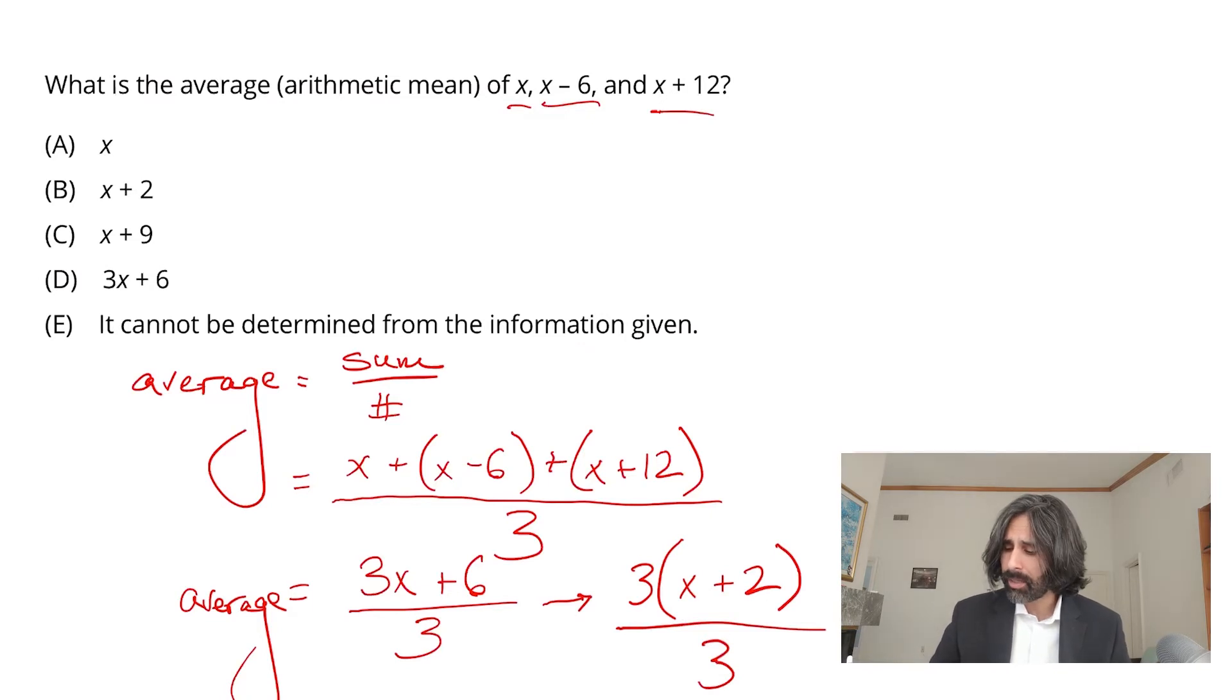Pull a 3 out, and you'll be left with an x and a 2 inside. Whatever it would take to multiply back to a 3x plus 6, essentially. Put that all over 3, and now through the magic of algebra, the 3s disappear, as though they were never even there to begin with. Let's never talk about them again. We're left with the answer. The average is x plus 2.